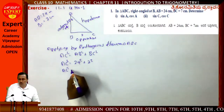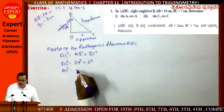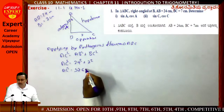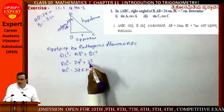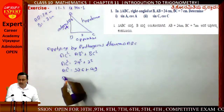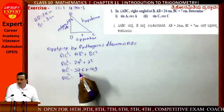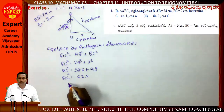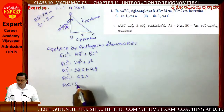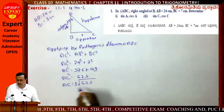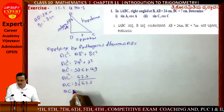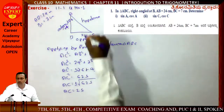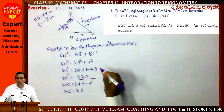AC² = 576 + 49 = 625. Therefore AC = √625 = 25. So AC = 25 cm.